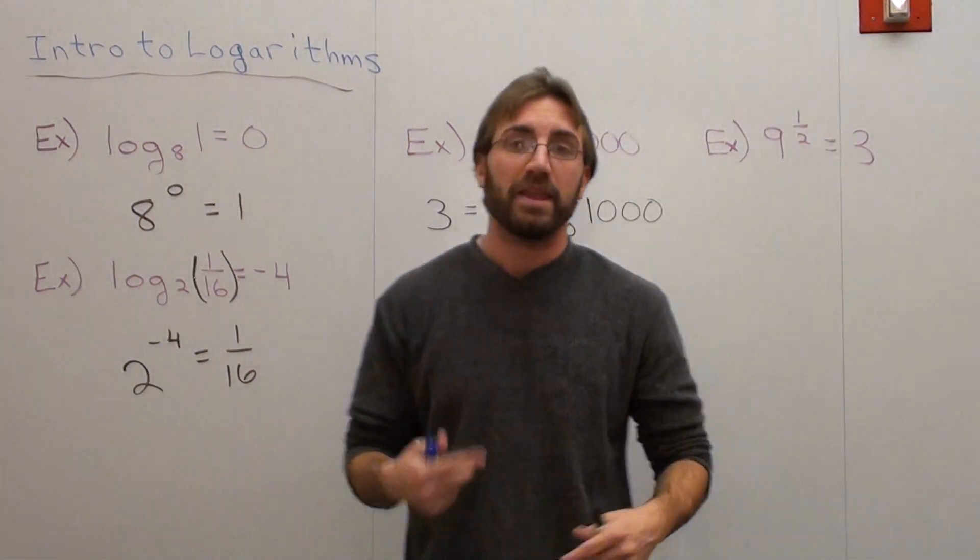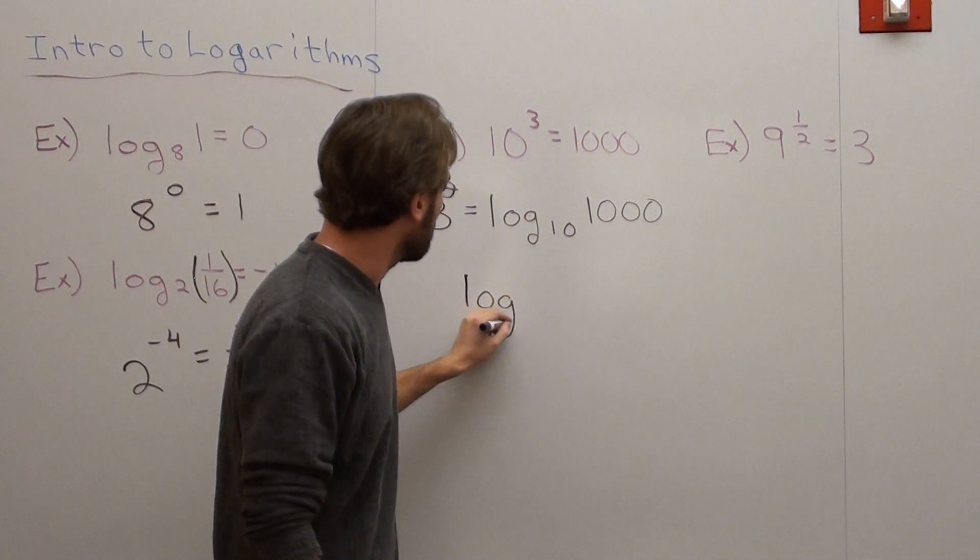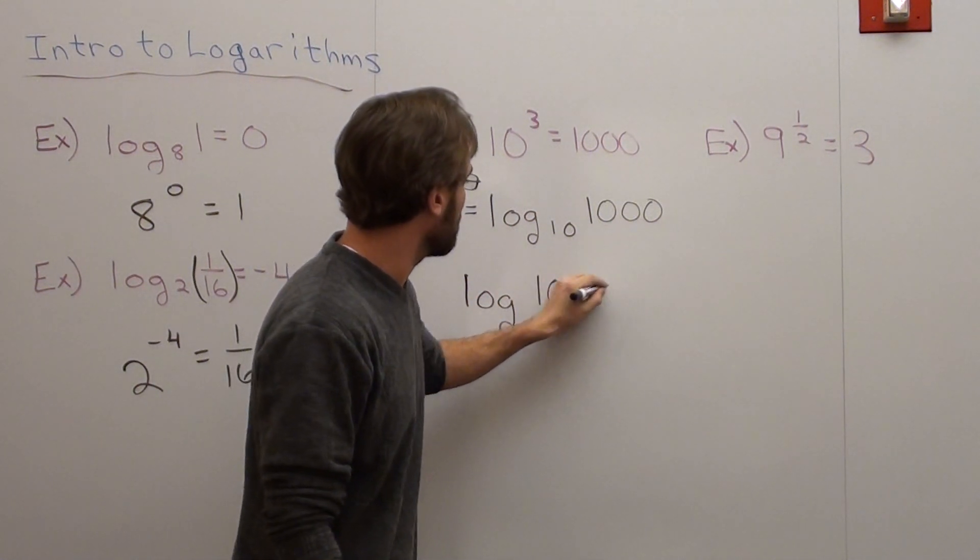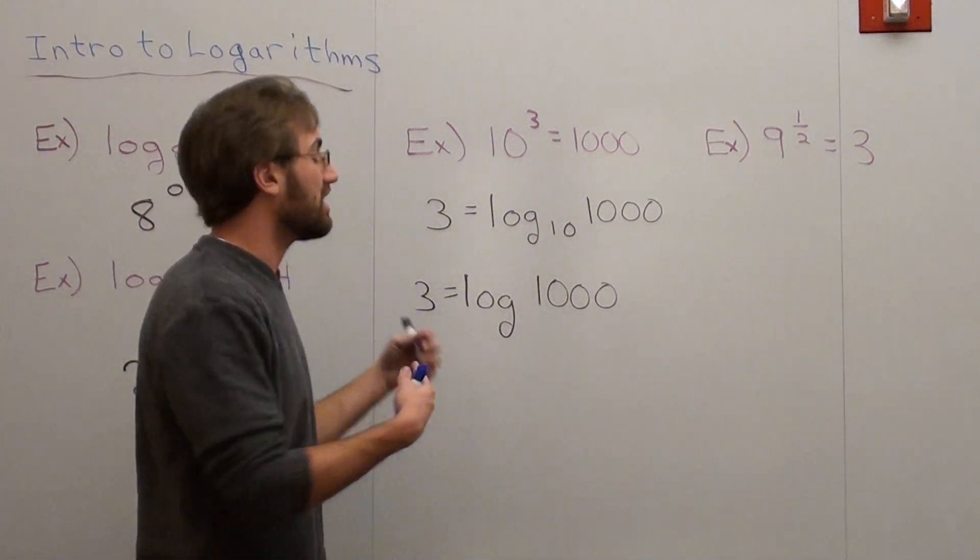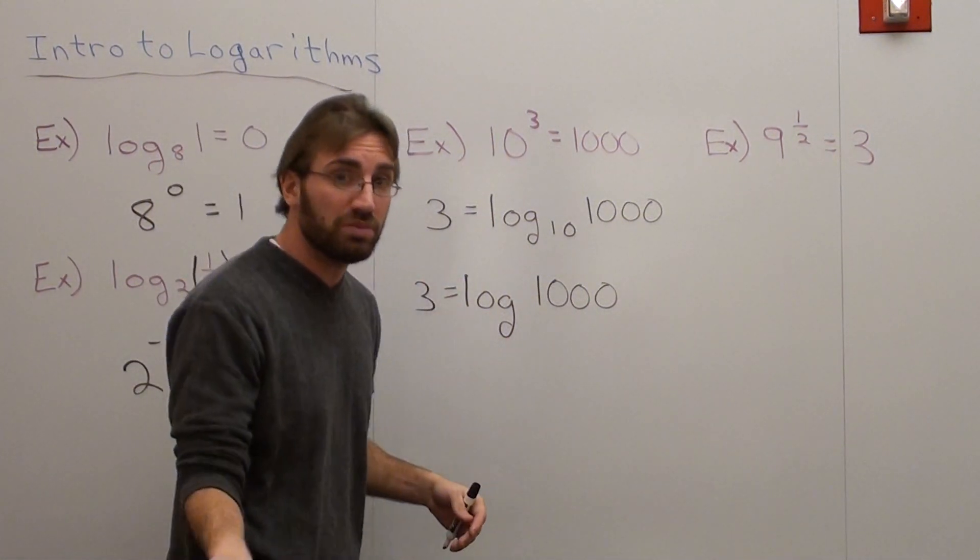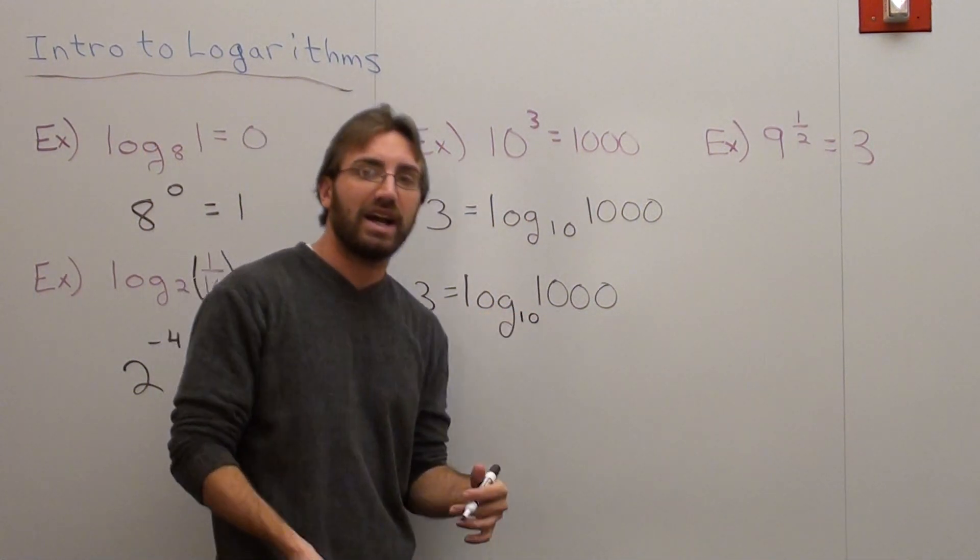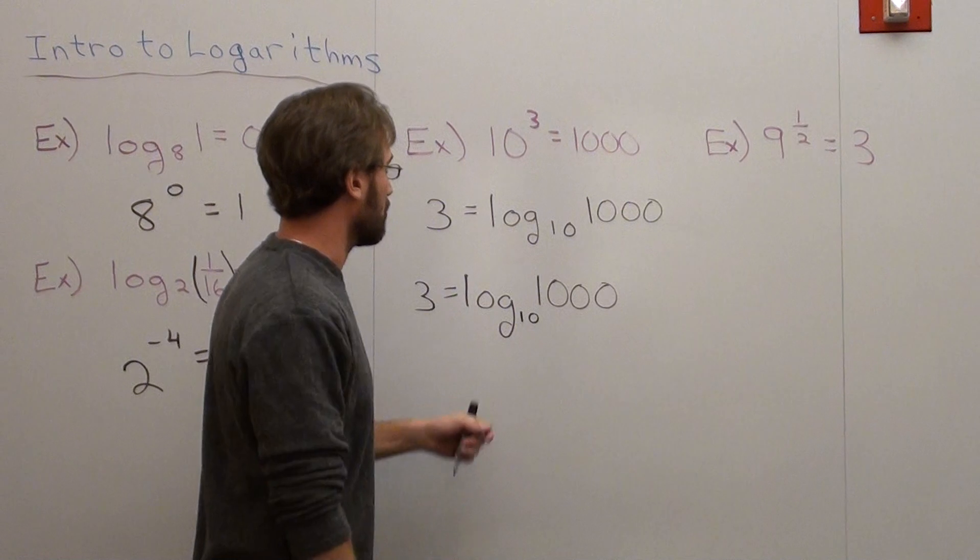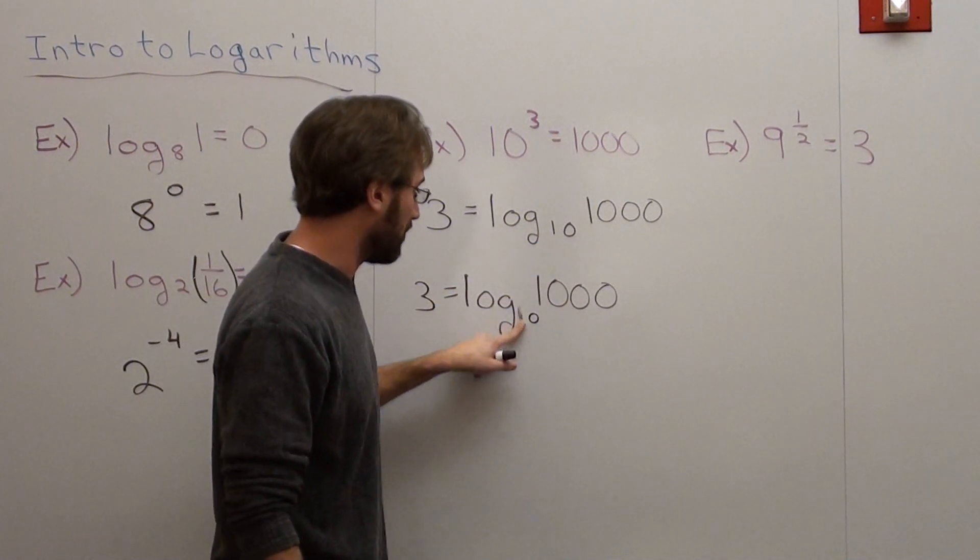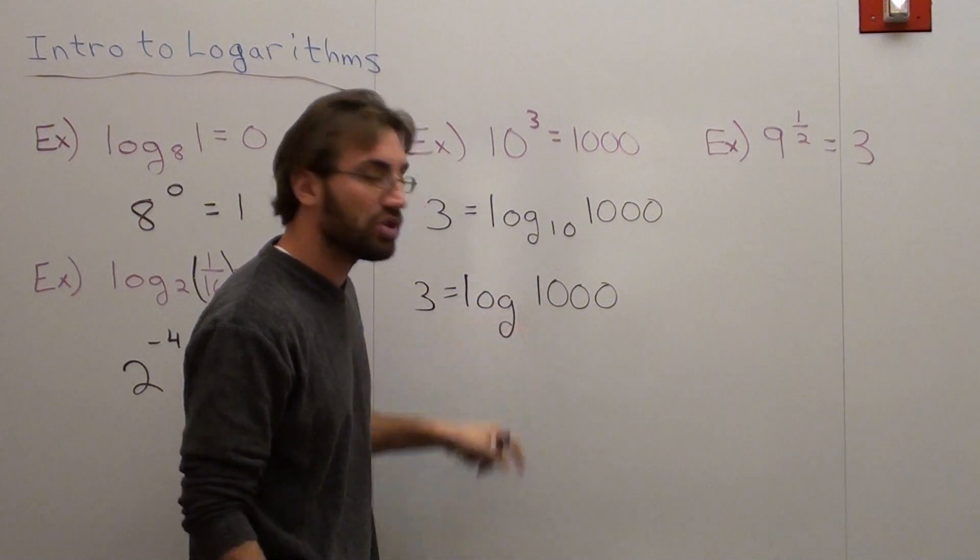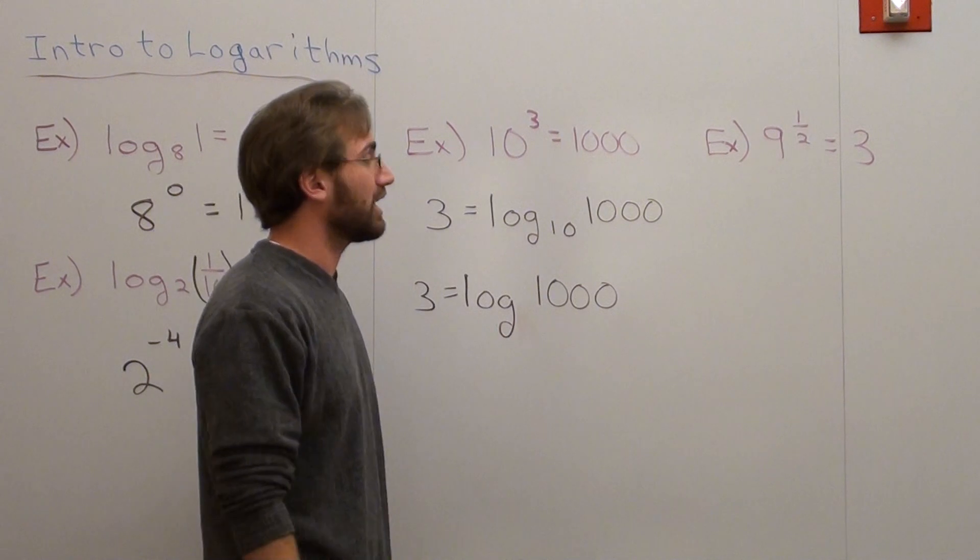I should say this again. If you see a problem, let's say like this, log of 1,000 equals 3, some students are going to say, well, where's the base? If it doesn't specifically state the base, it's assumed that the base is 10. If the base is not 10, it will otherwise state it. So sometimes you'll see it look like this, and sometimes you'll see it with no number in front of it because they want you to assume that the base is 10. That seems a little unfair, but it is what it is.